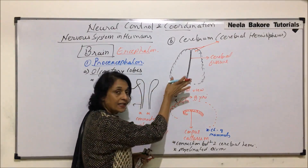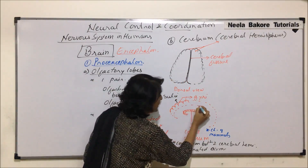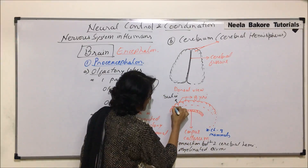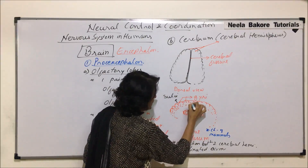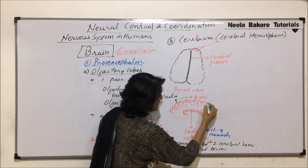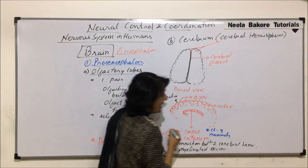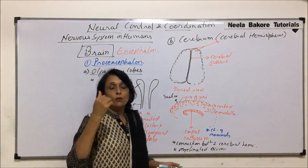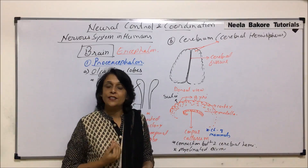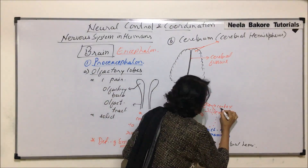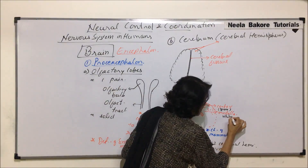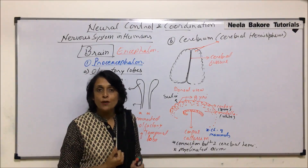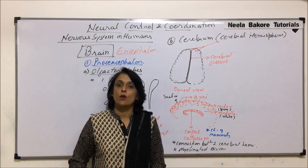Taking a section through the cerebrum, the outer part is made up of the cortex and is known as the cerebral cortex. The inner part is the medulla. In the case of the brain, the outer cortex is gray matter and the inner part is white matter. Gray matter is where the cell body or cytone of the neuron is, and white matter is where only the axon fibers are present.